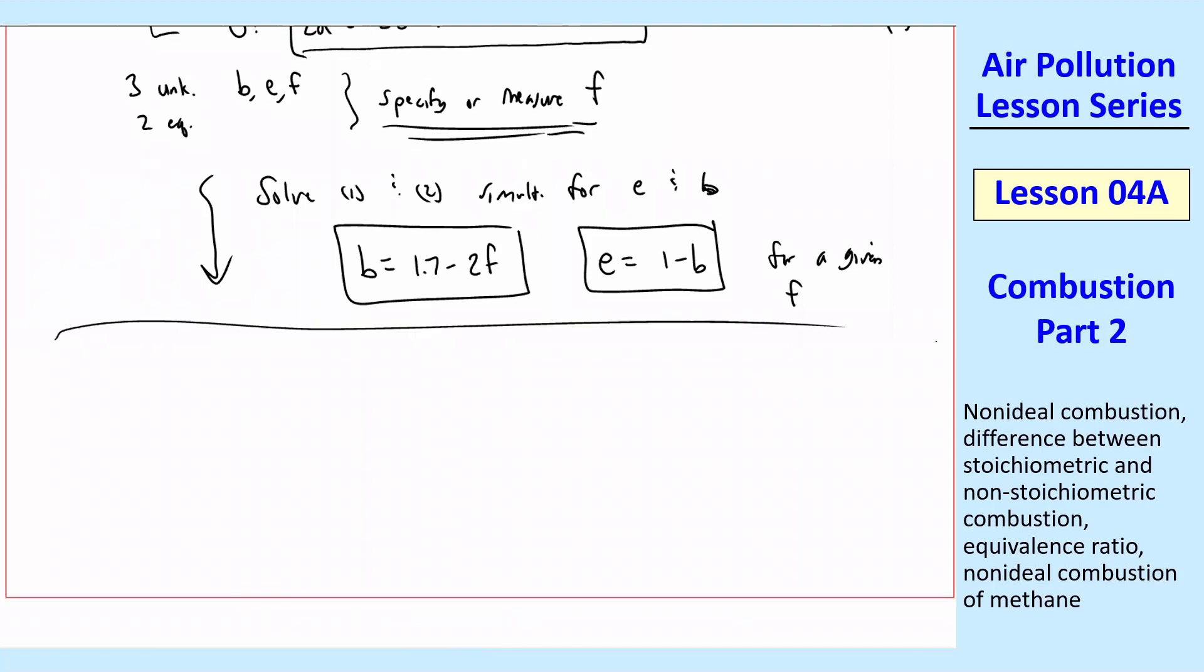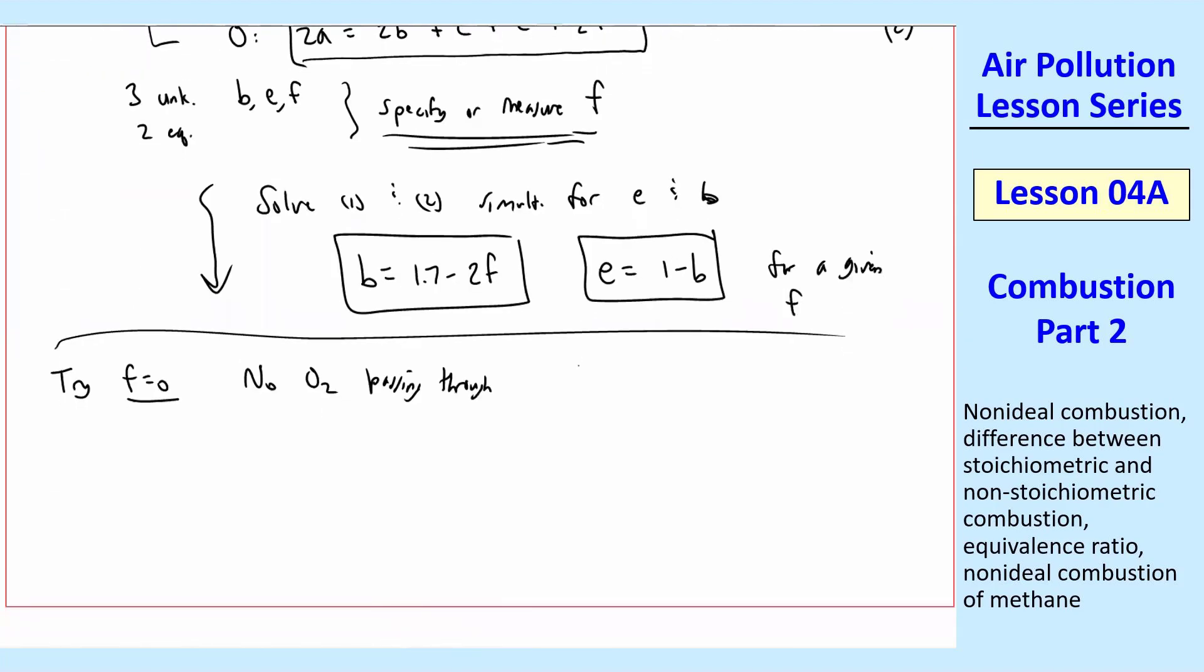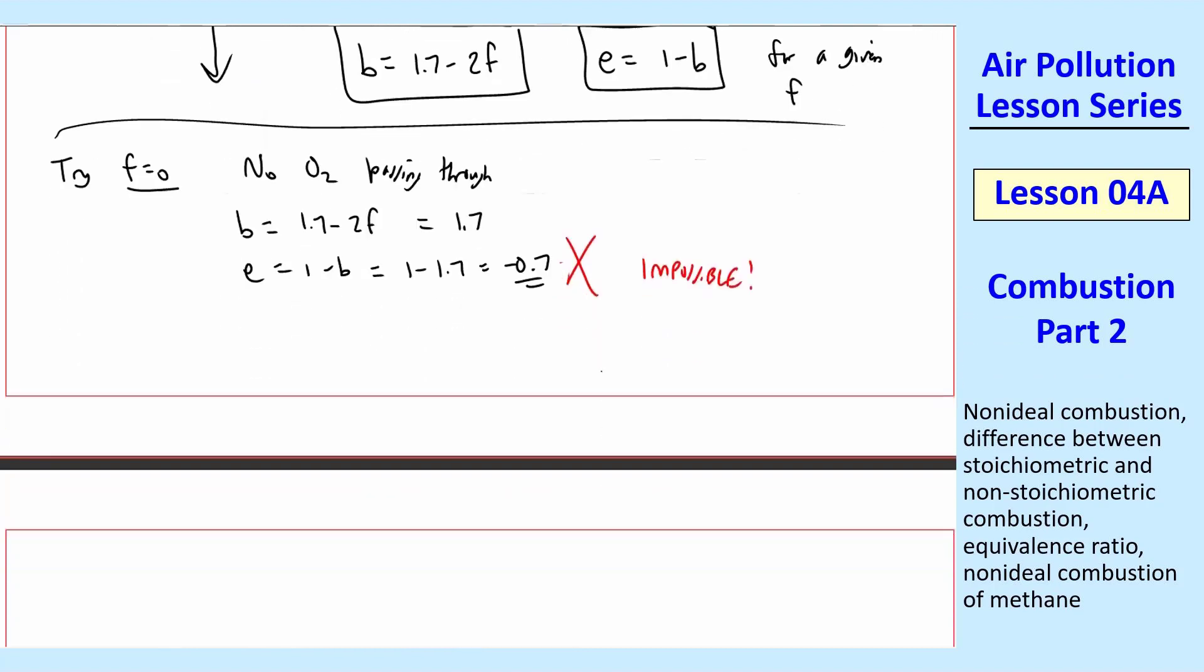So let's just try some cases. So let's try F equals 0 and see what happens. Well, in other words, that means there's no O2 that's just passing through. All of that O2 gets converted to either the carbon dioxide or the water vapor or the CO, but there's no O2. Is that possible? Well, we can plug in these equations here. So I get B equal 1.7 minus 2F, and F is 0, so this is just 1.7. And then E is 1 minus B is 1 minus 1.7 equal negative 0.7. And when you get a negative molar coefficient, you say, nah, that's impossible. You can't have that. You can't have a negative molar coefficient. So obviously, this is not possible.